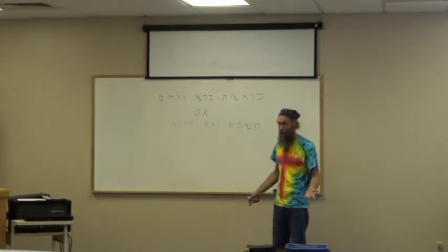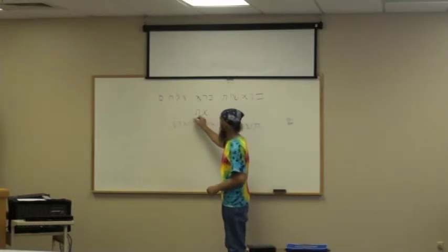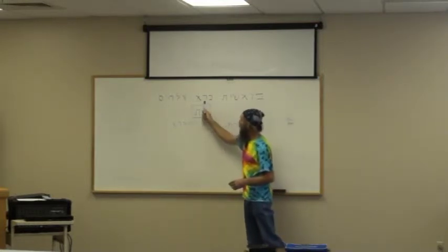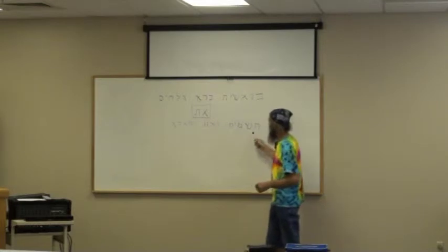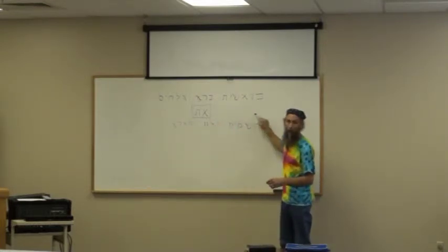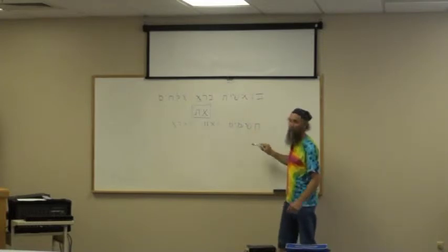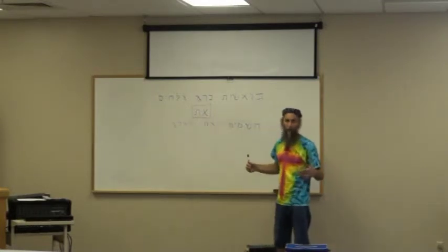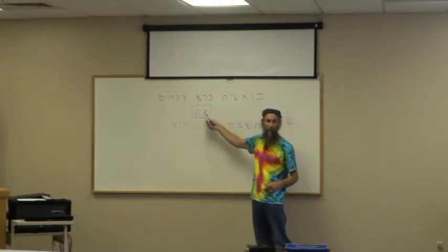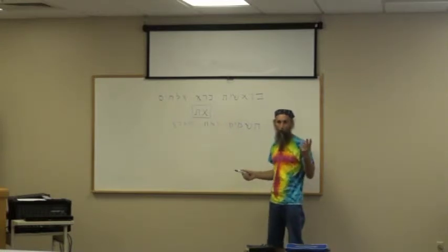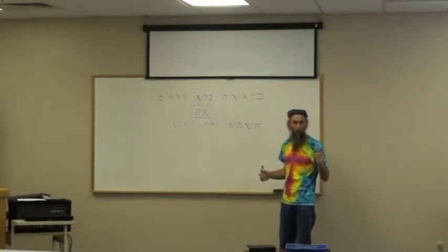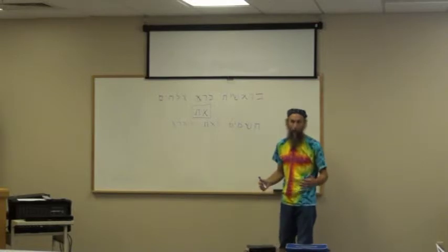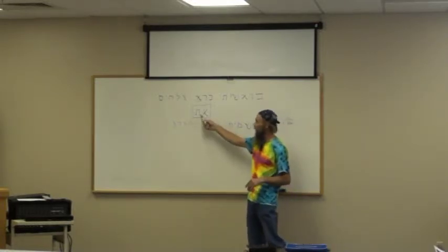The next word is an interesting one: et. Normally this isn't translated at all. In the beginning, created, Elohim — et — Hashemayim. It's working towards this word; he created the heavens, but there's nothing we have comparable to it in English. However, this word can also mean 'with.' There are two words that can be translated as 'with': one is im and one is et. When Cain was named, et has a specific meaning, and the naming of Cain demonstrates something really unbelievable. I can't wait until we get there.